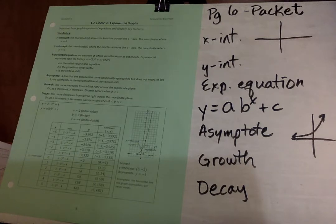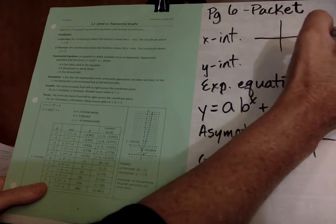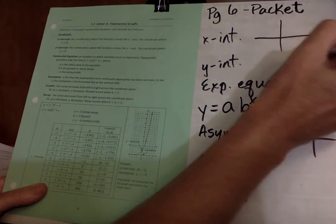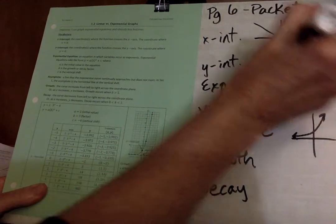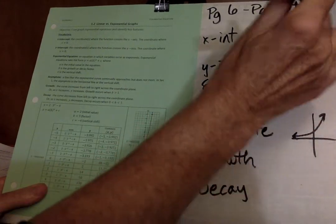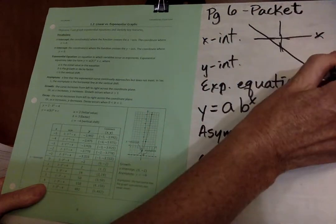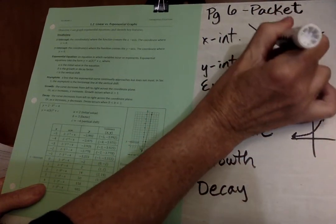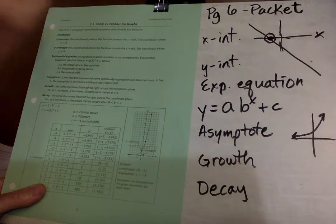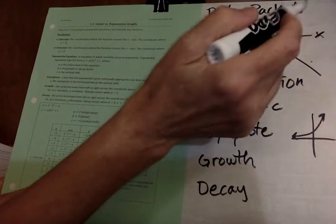So we have some vocabulary here. First is the x-intercept is the coordinate where the function crosses the x-axis. So over here, here's the x-axis. If we have a line like that, that's a pretty bad example. Let's try that again. So if it's like this, right here, wherever that point is, that is your x-intercept, where the line crosses the x-axis.